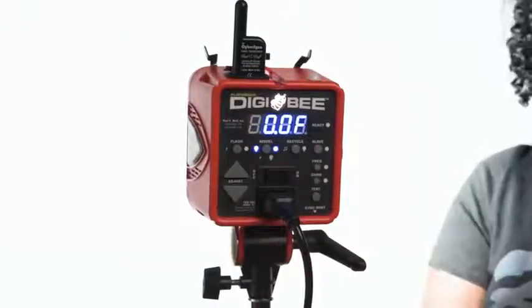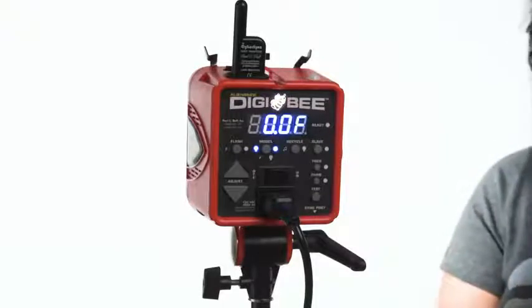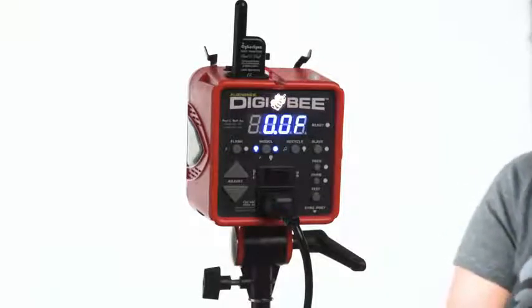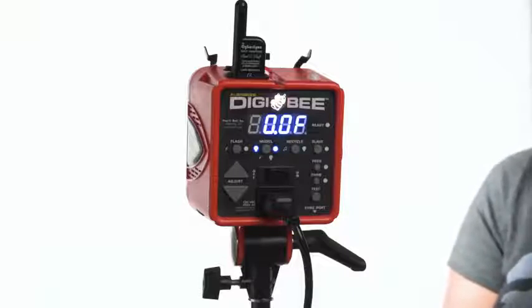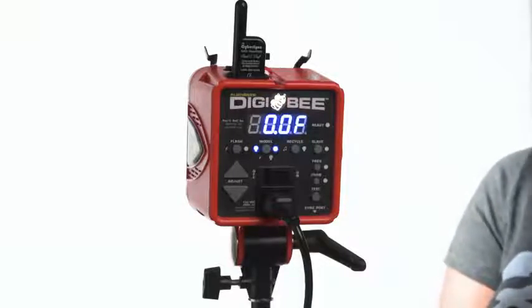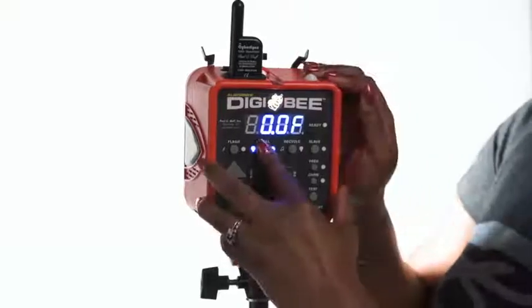When the solid light bulb is glowing blue, that means the Digibee's modeling lamp is in full power mode, which simply means the modeling lamp is at full power all the time. And you can, of course, turn the modeling lamp off if you do not need to use it at all.